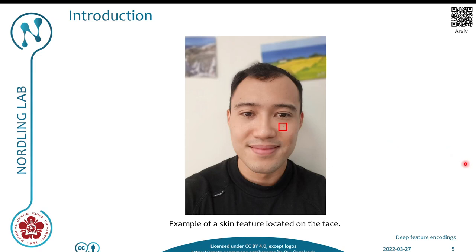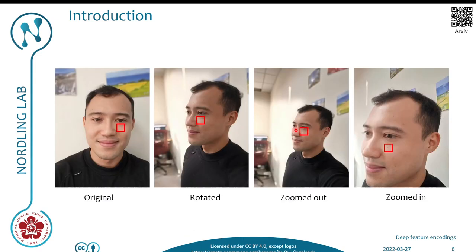If feature tracking is iterative feature matching, then what actually constitutes a feature? Well, a feature is a salient part of an object. Here, the object is my face, and the feature is a small point on my face. Even though I rotate, zoom out, or zoom in the camera, we can see that the feature is still visible, and therefore we should be able to locate it in every frame.